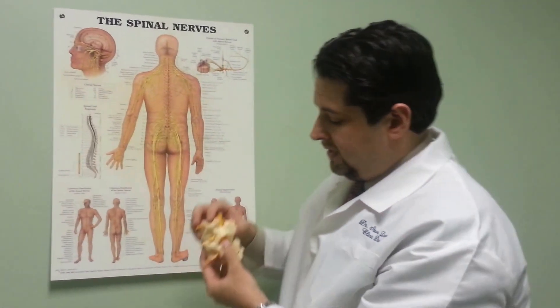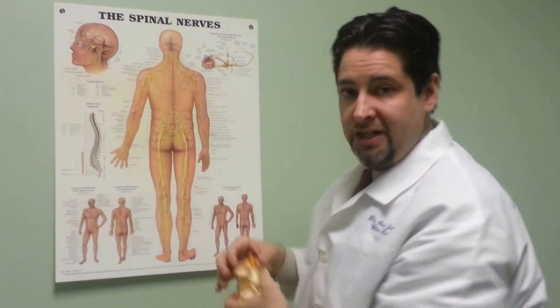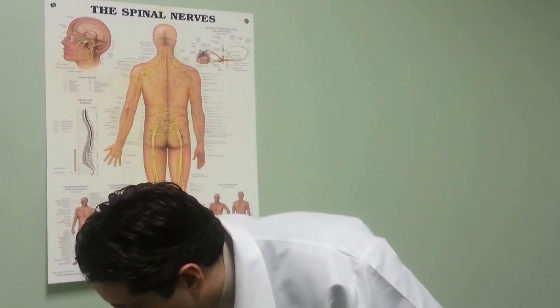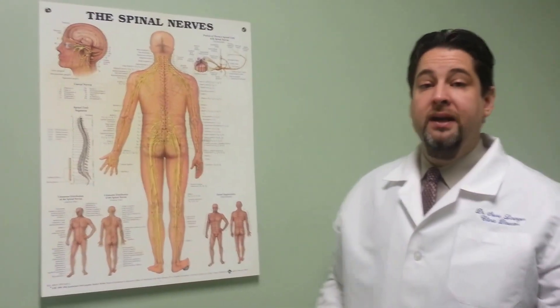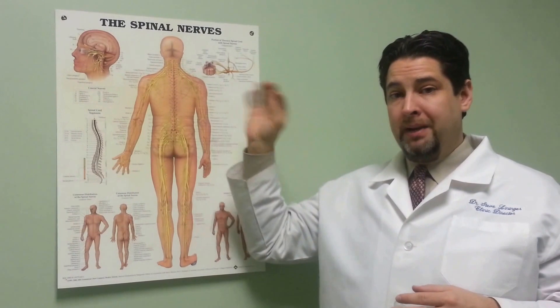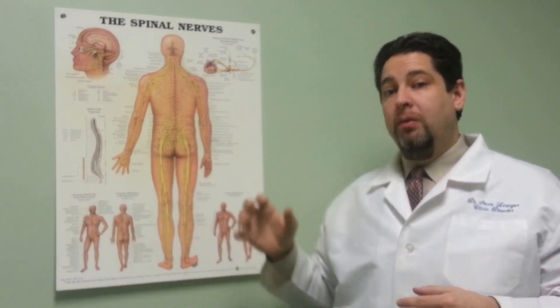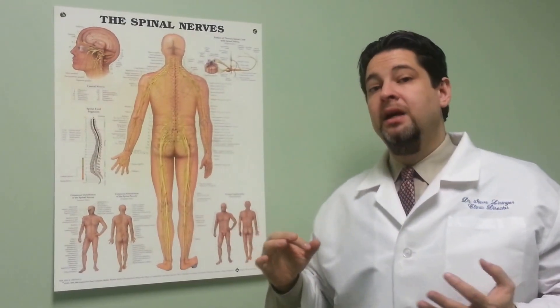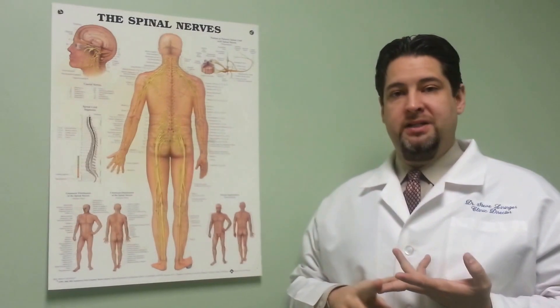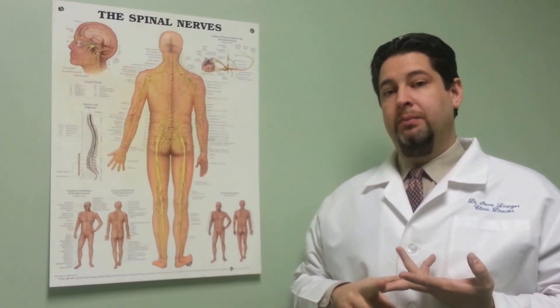So one of the things we look for is subluxation or misalignment at C1 and C2. Now when dealing with migraine sufferers, in addition to the structural component that may or may not be there with migraines or cluster headaches, you're also going to have to look at metabolic issues. I'll typically want to see the blood work and know about the diet the patient is currently on, so we may have to make adjustments there as well.